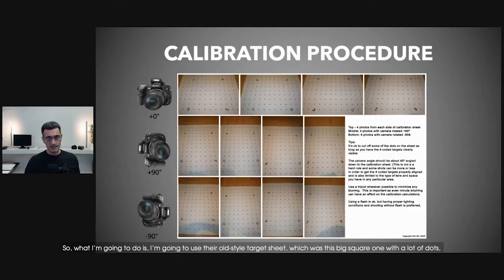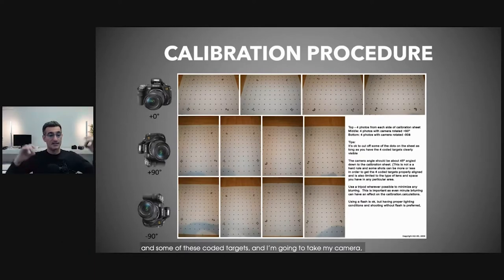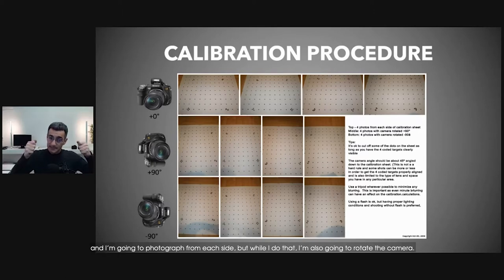So what I'm going to do is use their old style target sheet, which has a lot of dots and some coded targets. I'm going to take my camera and photograph from each side, but while I do that I'm also going to rotate the camera.